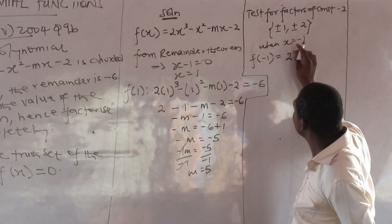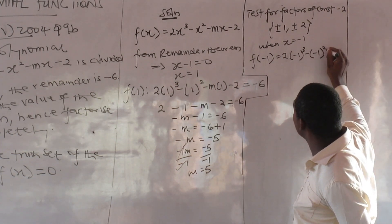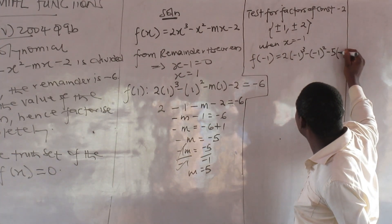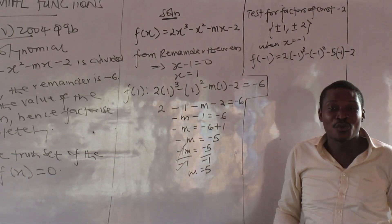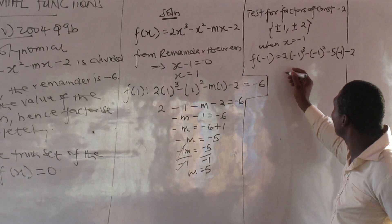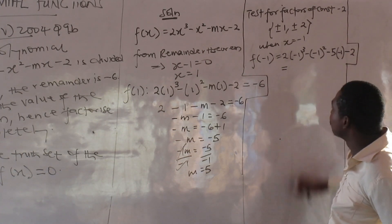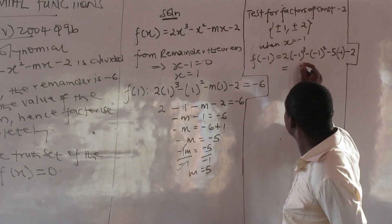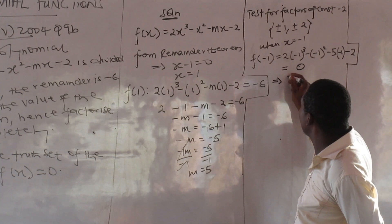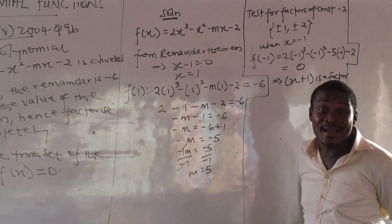So f(minus 1): that is 2(minus 1) cubed minus (minus 1) squared minus 5(minus 1) minus 2. Since m is now 5, the result comes out to zero. So this implies x plus 1 is a factor. The factor which produced minus 1 was x plus 1, so x plus 1 is a factor.